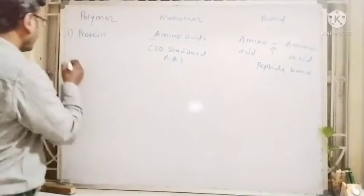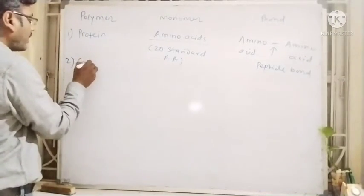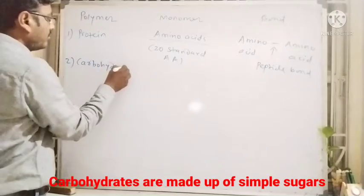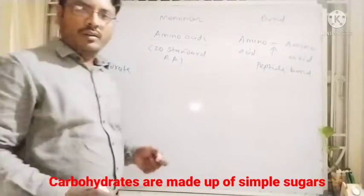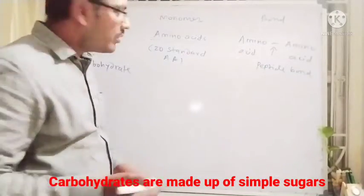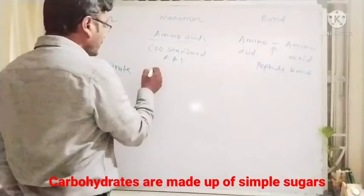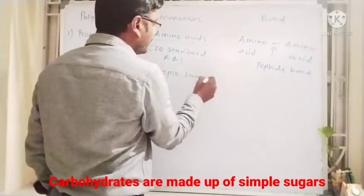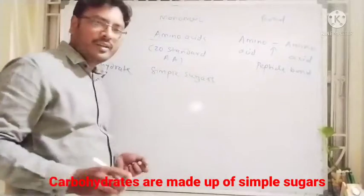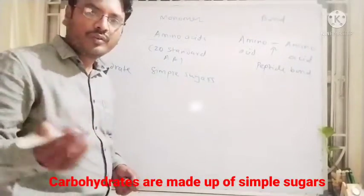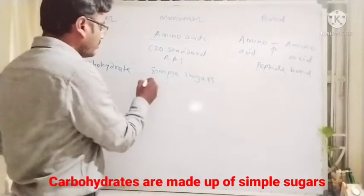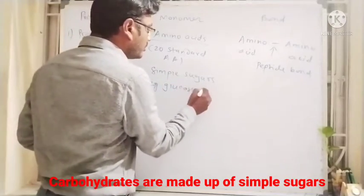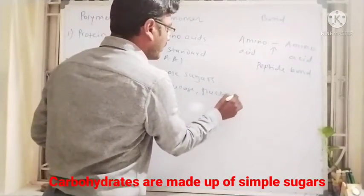Now the second one: carbohydrates. Carbohydrates are made up of simple sugars. The monomer present in carbohydrates is a simple sugar, for example glucose, fructose, etc.